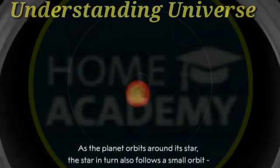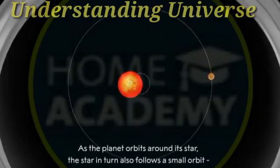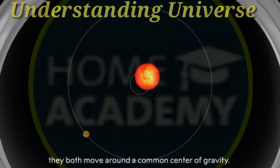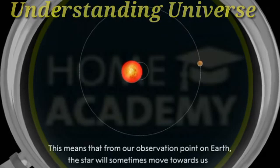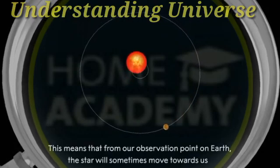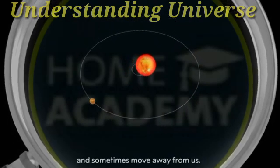As the planet orbits around its star, the star in turn also follows a small orbit. They both move around a common center of gravity. This means that from our observation point on Earth, the star will sometimes move towards us and sometimes move away from us.